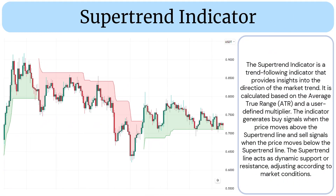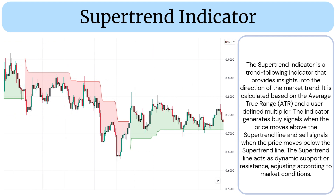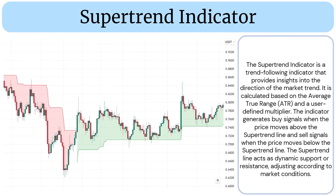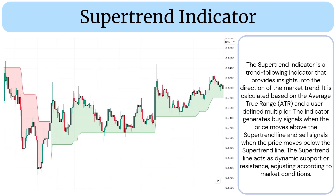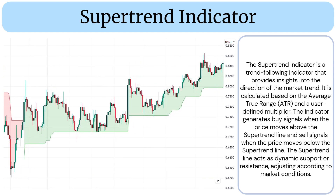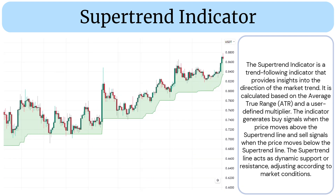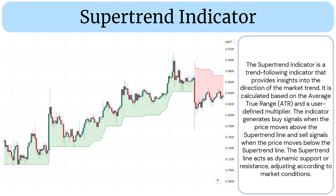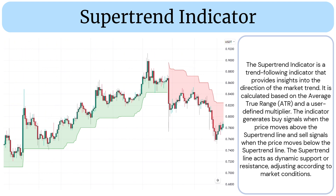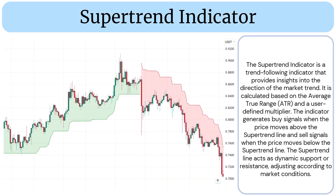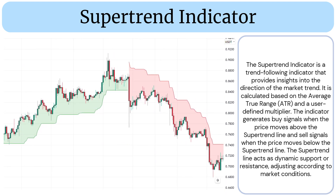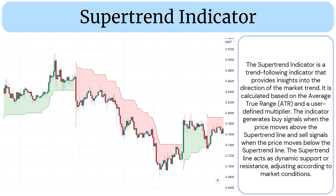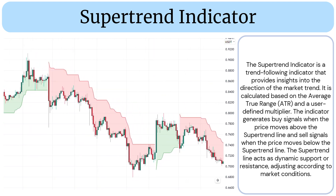The supertrend indicator is a trend following indicator that provides insights into the direction of the market trend. It is calculated based on the Average True Range (ATR) and a user-defined multiplier. The indicator generates buy signals when the price moves above the supertrend line and sell signals when the price moves below the supertrend line. The supertrend line acts as dynamic support or resistance, adjusting according to market conditions.